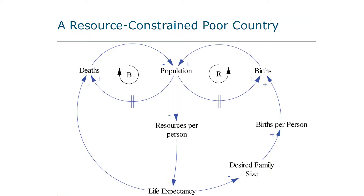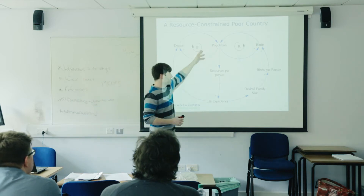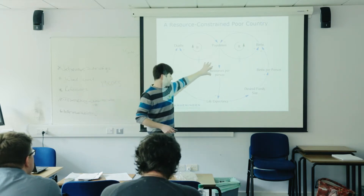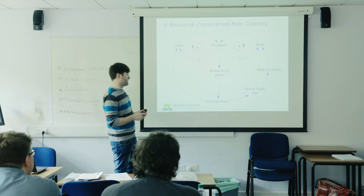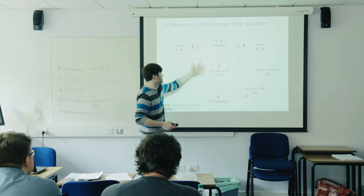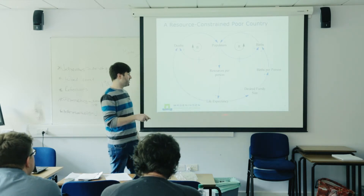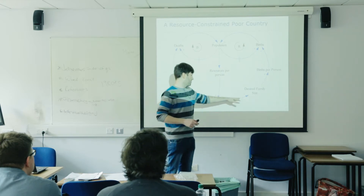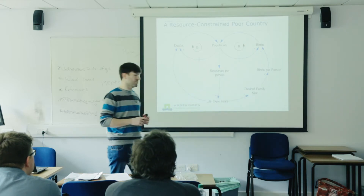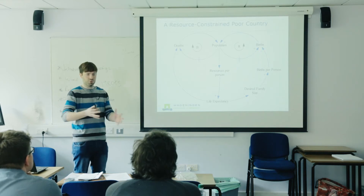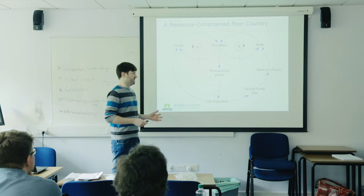We can take resources into account. Consider a resource-constrained poor country with no resources. The higher the population, the fewer resources per person. The fewer resources per person, the lower the life expectancy. And there seems to be an observation — I'm not into social science — but the lower the life expectancy, the higher the desired family size, to make sure there are enough children to take care of you. At least that's what I've read.